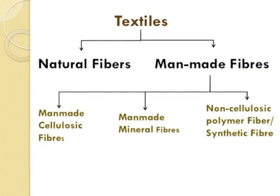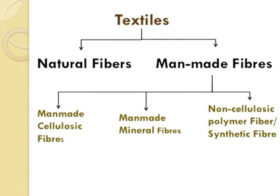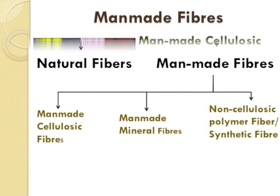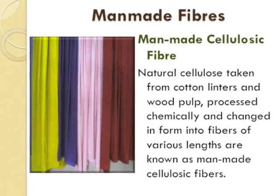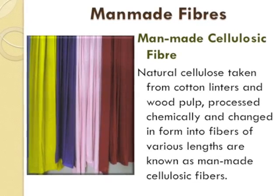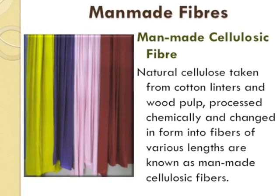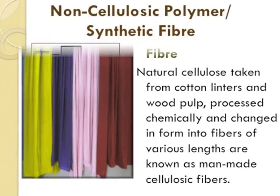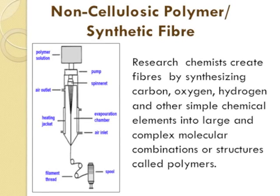Man-made fibers can be divided into two categories: cellulosic fibers and non-cellulosic fibers. Natural cellulose taken from cotton linters and wood pulp, processed chemically and changed in form into fibers of various lengths, are known as man-made cellulosic fibers.